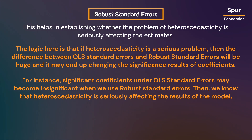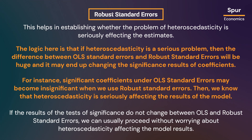Then we know that heteroscedasticity is seriously affecting the results of the model. If the results of the tests of significance do not change between OLS and robust standard errors, we can usually proceed without worrying about heteroscedasticity affecting the model results.